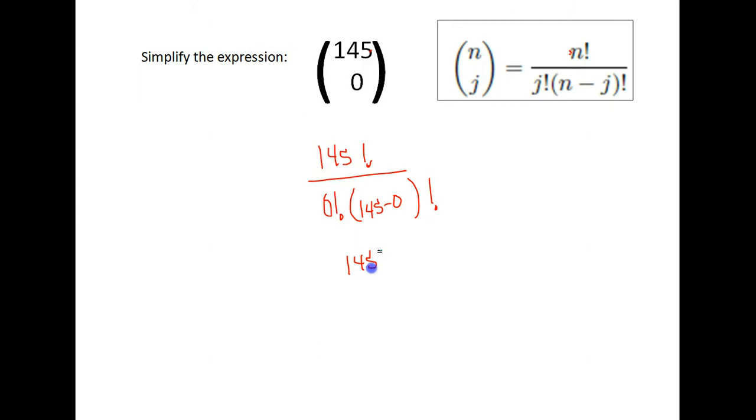We'll notice that gives us 145 factorial on top, a zero factorial, and then a 145 factorial here also, because 145 minus zero is 145. So 145 factorial in top and the bottom is going to cancel and leave me with one over zero factorial. And we can't divide by zero, but this is not zero. It's zero factorial, which is always equal to one. So we get one over one, or one as our answer.